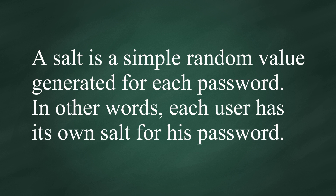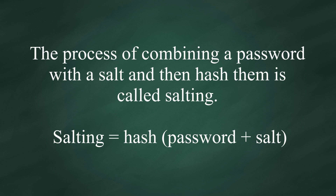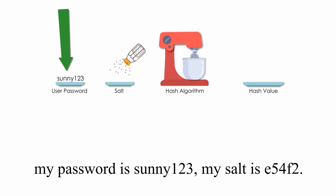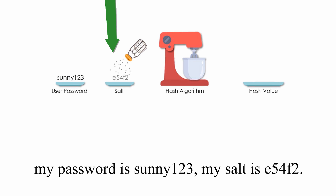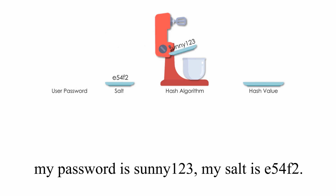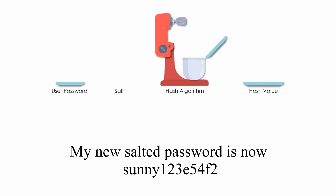A salt is a simple random value generated for each password. In other words, each user has his own salt for his password. The process of combining a password with a salt and then hashing them is called salting. For example, my password is sunny123. My salt is e54f2. Combining my password sunny123 with my salt e54f2,